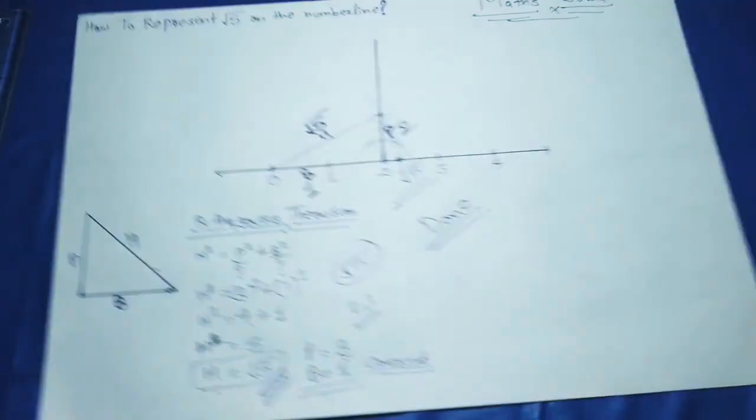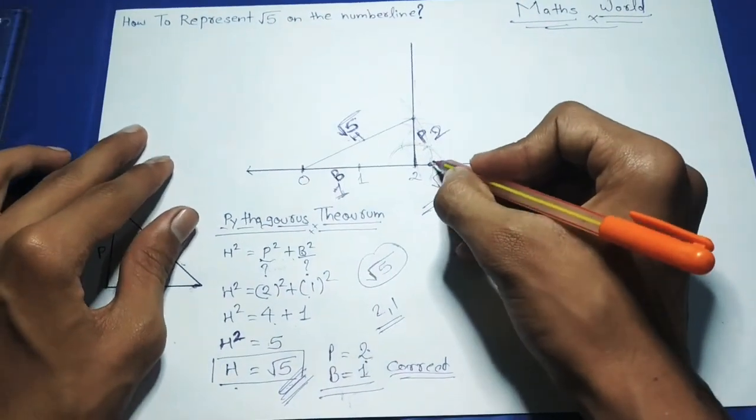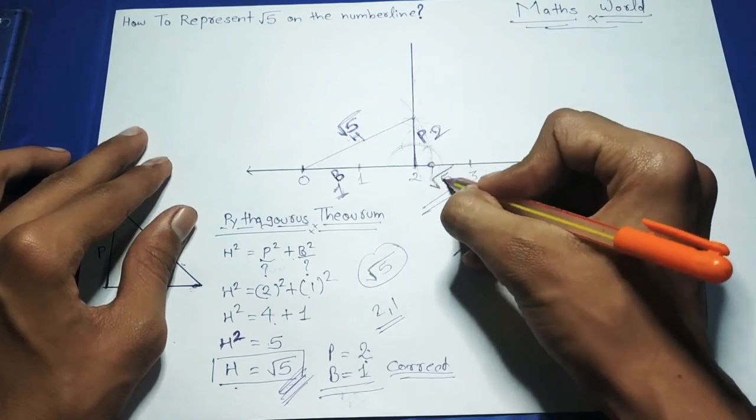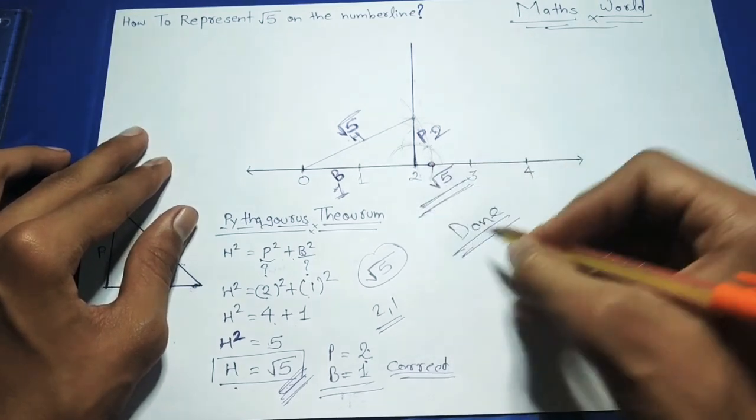This is the point on the number line, which we call square root 5. So our question is done.